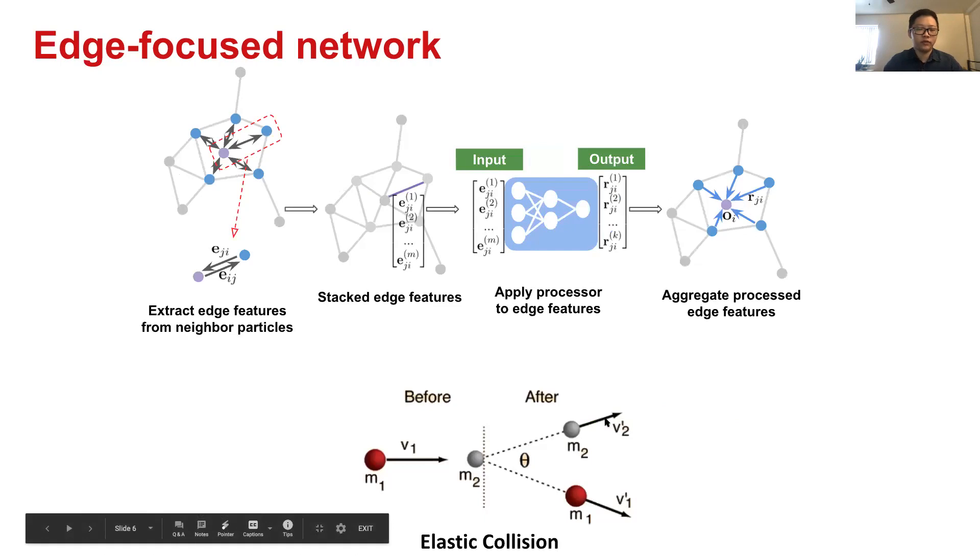For edge-focused network, why collision net is designed as an edge-focused network is that collision is actually a pairwise effect. We cannot define collision on a single particle. At least we should have two particles involved for collision.